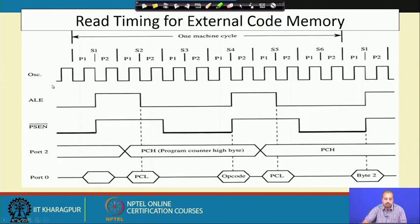Looking at the timing diagram: we have the oscillator clock, and the ALE signal which is activated at certain points. When the ALE signal is falling, the lower order address bits on Port 0 will be put out and sensed. Those lower order address bits get latched at that point. After that, the PCN bar line will go low.